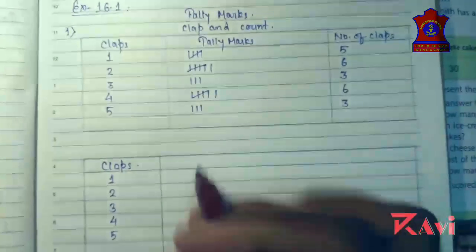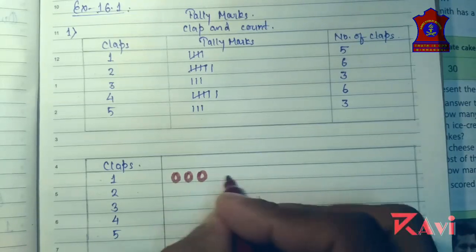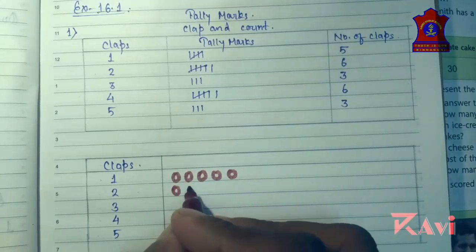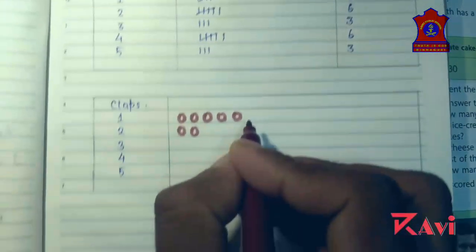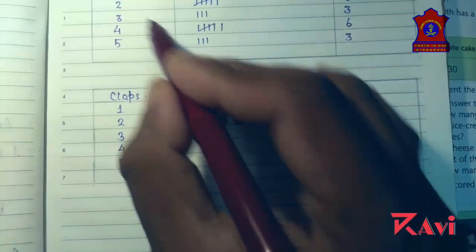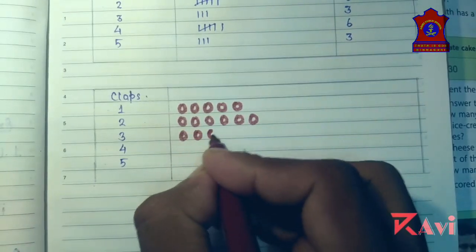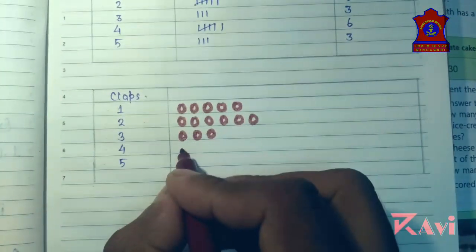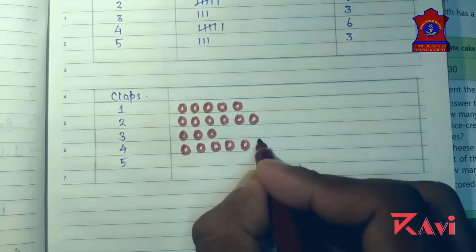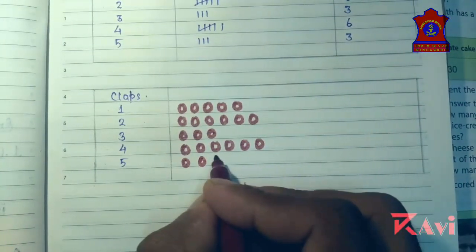How many 1-clap entries are there? 5 — so make 5 symbols. For 2 claps: 6 symbols. For 3 claps: 3 symbols. For 4 claps: 6 symbols. For 5 claps: 3 symbols.